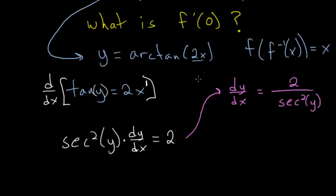And right now this relationship involves y, but we want something that involves x in it. So we can start with this relationship here, the tangent of y is equal to 2x, and think about what that means in terms of a triangle.